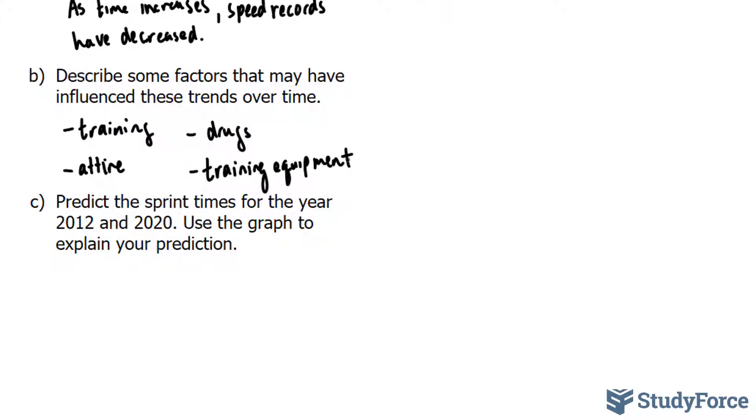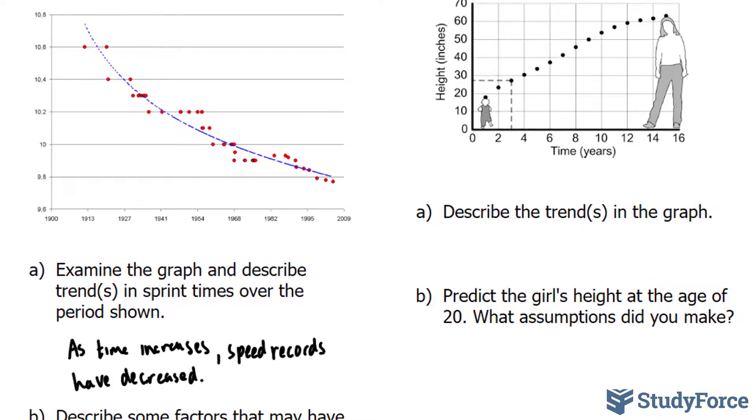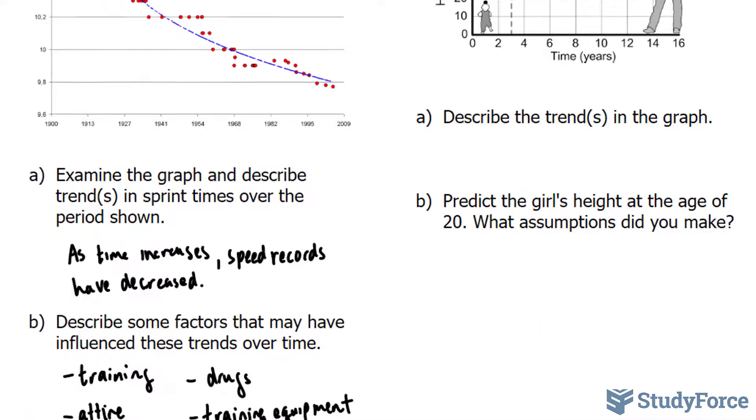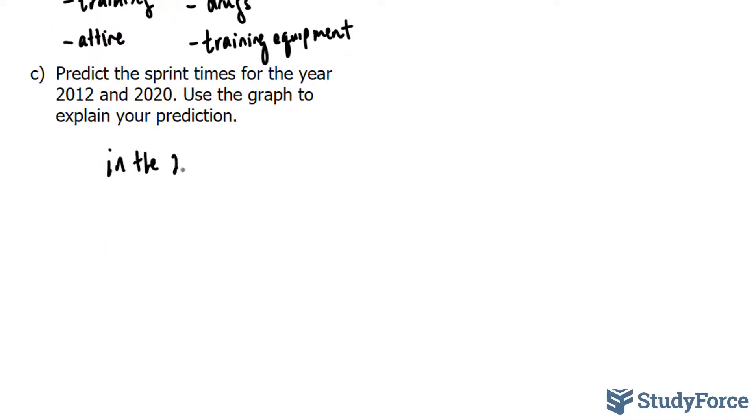Question C asks, predict the sprint time for the year 2012 and 2020. Use the graph to explain your prediction. So let's go back to the graph. Notice that the times have obviously decreased. But there comes a limit to everything. We know that eventually the last record will be broken, but it won't be broken by much. So we can say at the year 2012, which can be confirmed now, and the year 2020, the timing will be somewhere in between 10 and 9 seconds. Let's write that in. In the year 2012 and 2020, the record will be between 10 and 9 seconds.